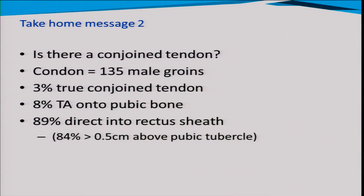In a recent review from 2009 this is brought up, mainly based on a large study by Condon who dissected 135 male groins and found a true conjoint tendon in only three percent of cases. In eight percent of cases there were fibers from the transversus abdominis running down onto the pubic bone, but in the majority of cases fibers were just inserting onto the lateral side of the rectus sheath and not going directly down onto the pubic crest. In most cases there was more than half a centimeter between the pubic crest and the lowest fibers. I'll be interested to hear the ideas of our surgical and radiology colleagues about this.